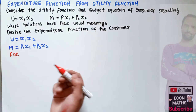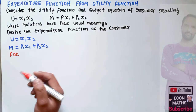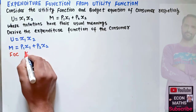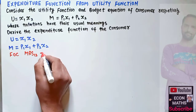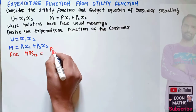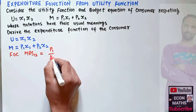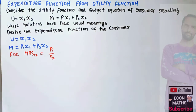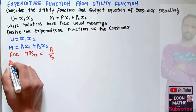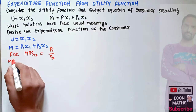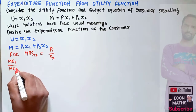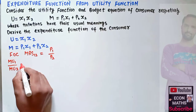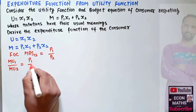The first step is to find the first order condition for optimality. The first order condition for maximization requires that the marginal rate of substitution between goods one and two should be equal to their price ratio, that means p1 upon p2.